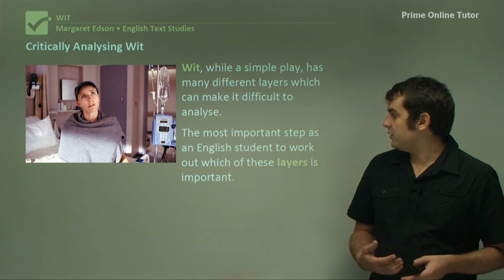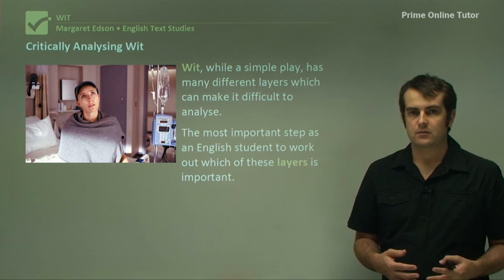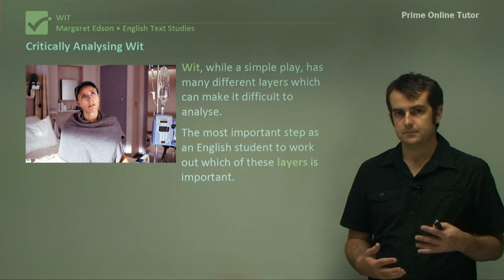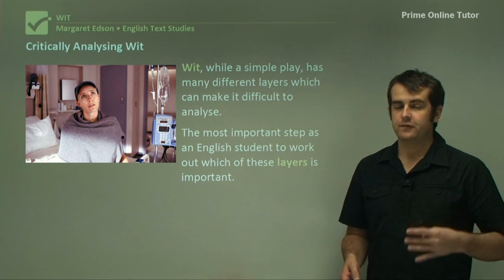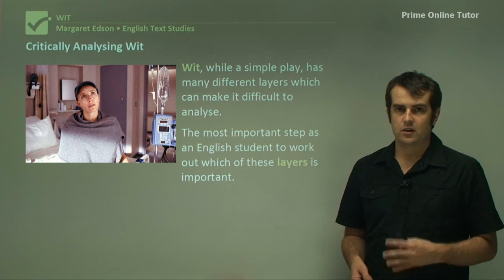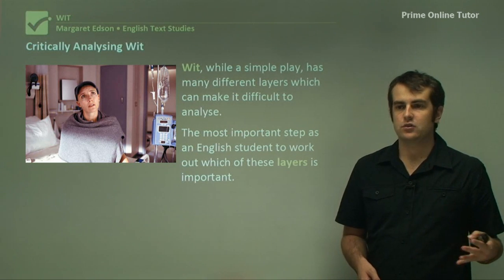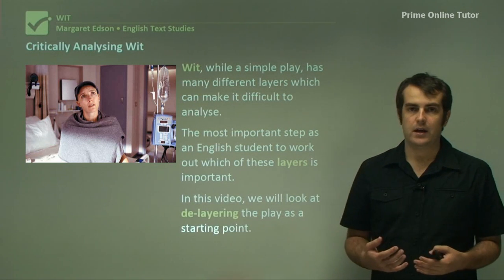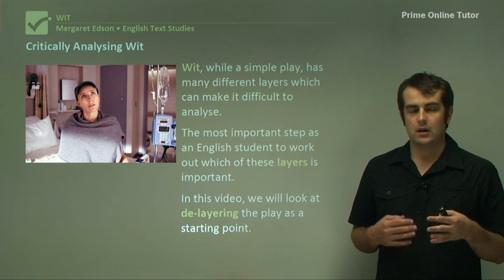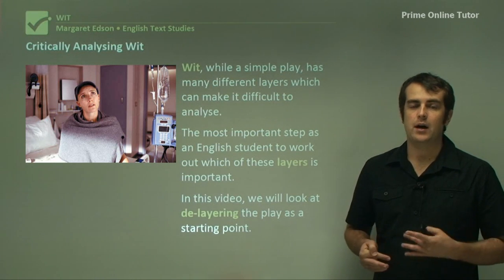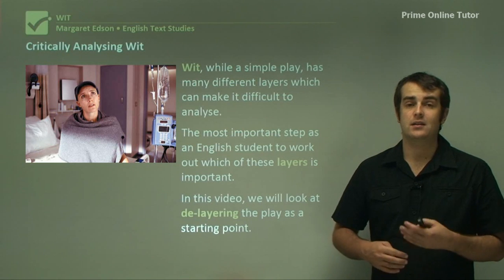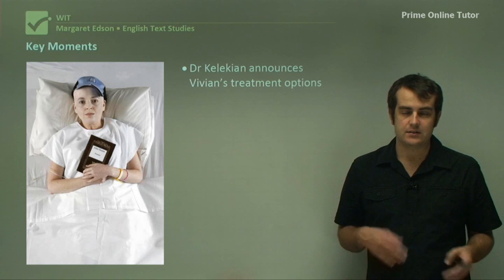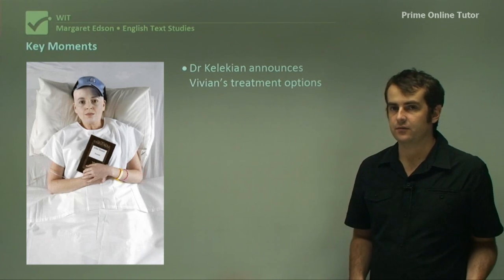The most important step as an English student is to work out which layers are important. If you've looked at different methods of interpreting this play, there are a number of different layers on which you can interpret it. What we're going to look at in this video is de-layering the play as a starting point, going through some of the key techniques and how they're built up and layer the whole play. Let's start off with some key moments from the play to find evidence for your responses.